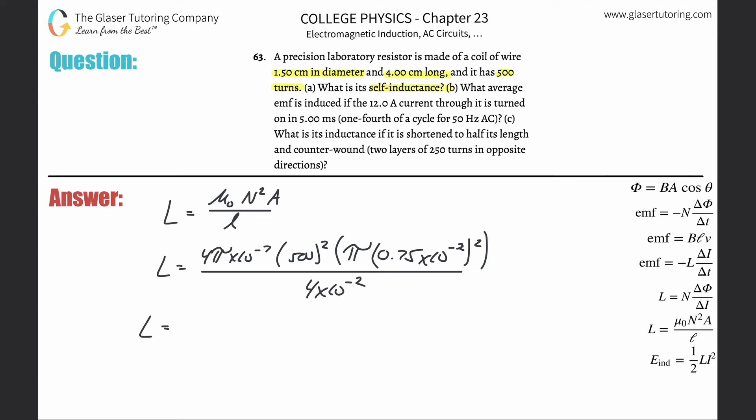So this calculation is 4π × 10⁻⁷ times 500² times π times (0.75 × 10⁻²)² divided by 4 × 10⁻². That works out to be about